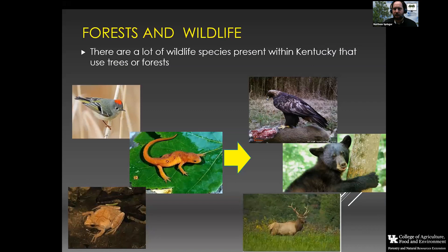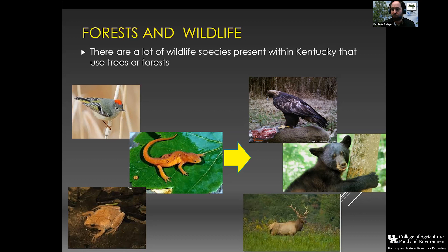In general, there are a ton of species within Kentucky and our region that rely on trees for some part of their life cycle. Sometimes it may be almost entirely tied to a tree. Other times it may just be roosting in a tree at night while migrating. But with the 500-plus species of traditional wildlife, many of them are using trees at some point or another.